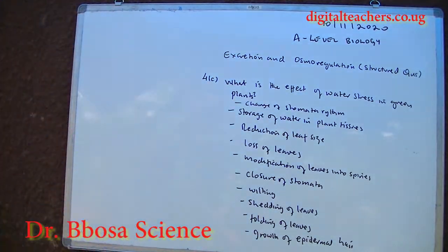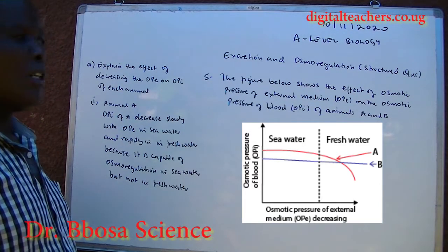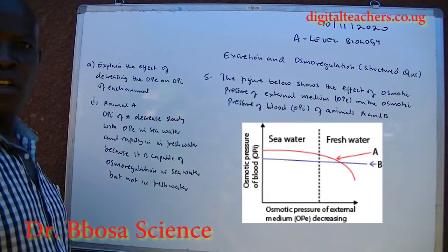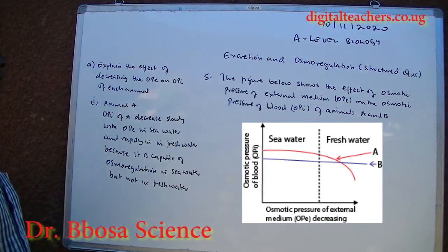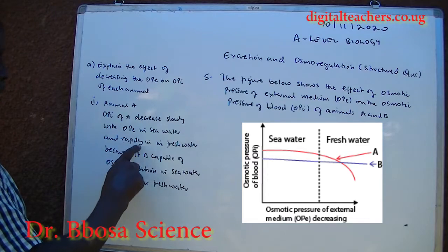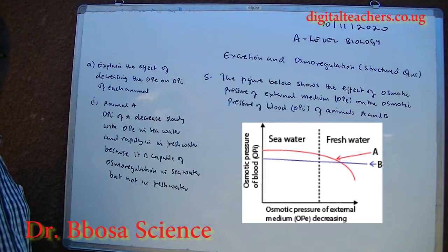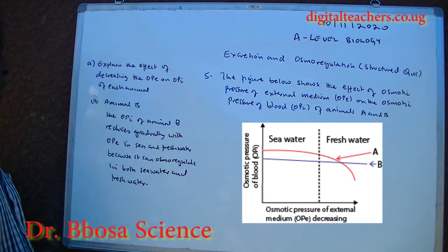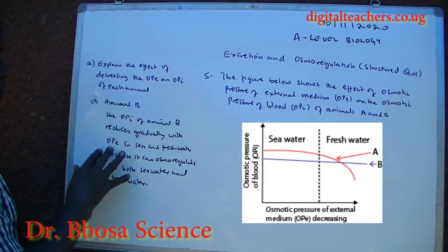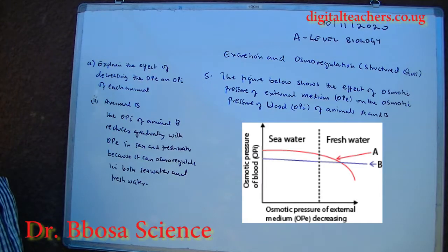Growth of epidermal hair is also an effect. Number five: the figure below shows the effect of osmotic pressure of external media (OPE) on osmotic pressure of blood (OPI) of animals A and B. Explain the effect of decreasing OPE on OPI of each animal. Animal A: OPI decreases slowly with OPE in seawater but rapidly in fresh water, because it is capable of osmoregulation in seawater but not in fresh water. Animal B: the OPI reduces gradually with OPE in both seawater and fresh water, because it can osmoregulate in both.